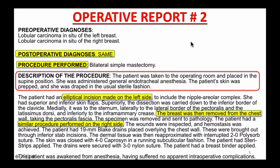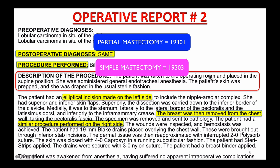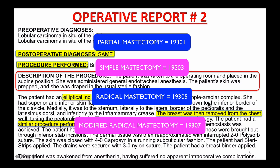On operative report number two, the key takeaway is that CPT has different codes for partial mastectomy (19301), simple mastectomy (19303), radical mastectomy (19305), and modified radical mastectomy (19307). You should open your CPT book, highlight these codes, and make notes.